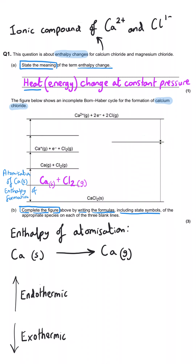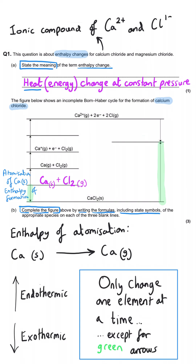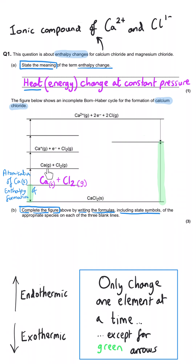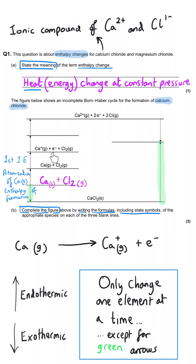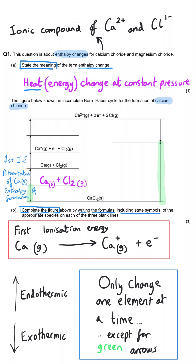You only change one thing at a time so you can isolate the particular enthalpy change occurring. On the next line up, also endothermic, the calcium gas is becoming Ca⁺(g) with an electron released. This represents the first ionisation energy of calcium — we've taken a mole of gaseous atoms and turned it into a mole of singly positive gaseous ions, removing that mole of electrons.